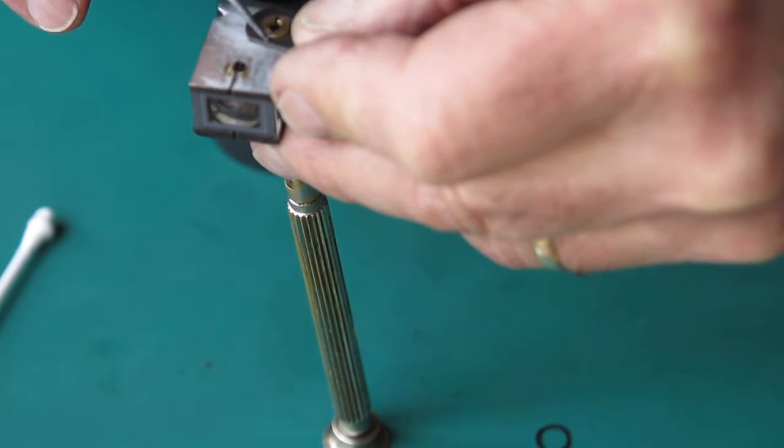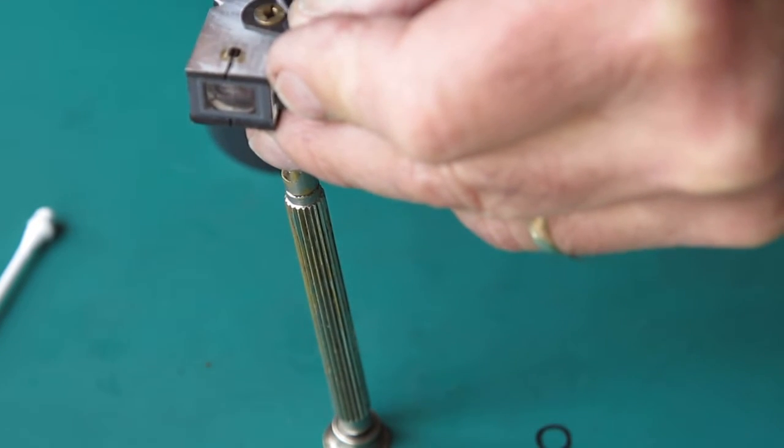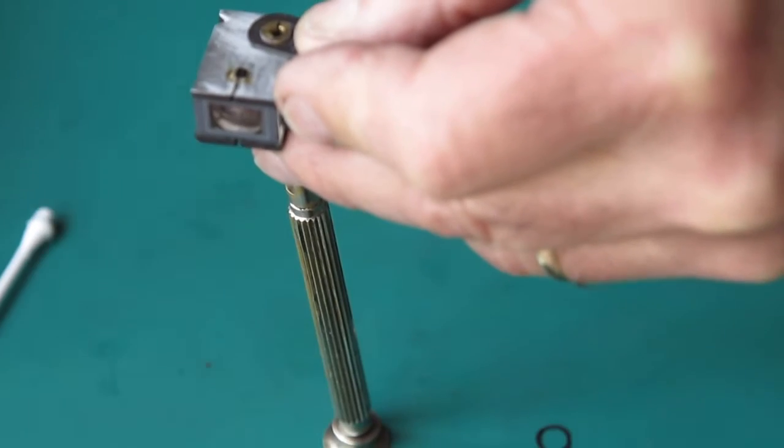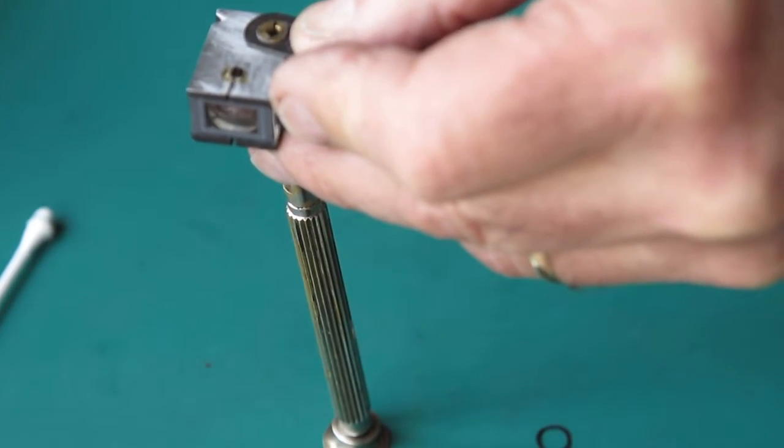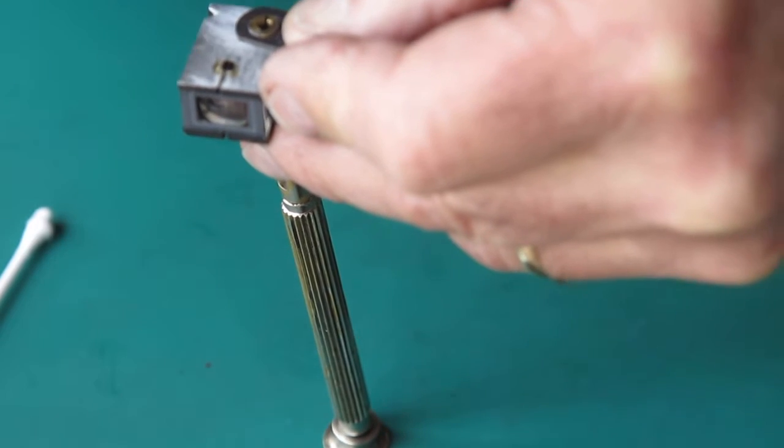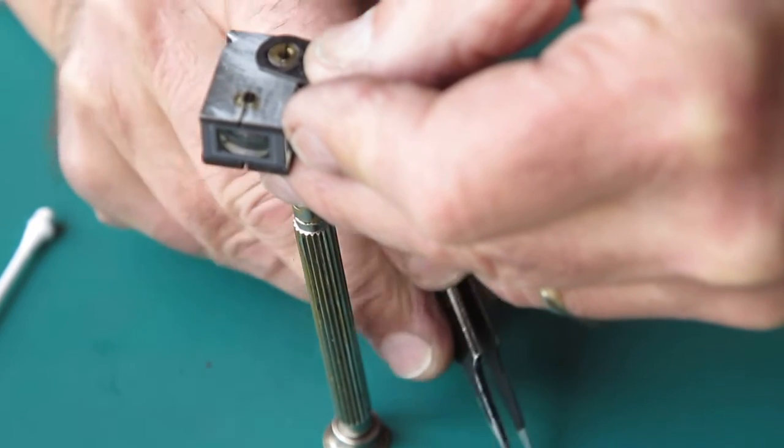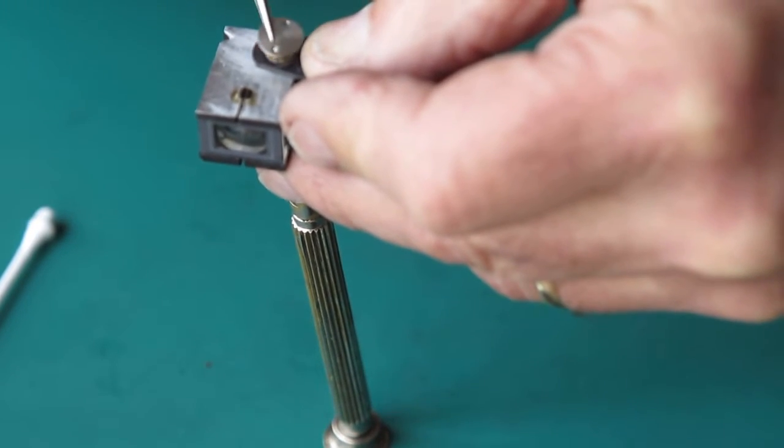A little wipe of molybdenum paste around the bush at the top there, because that's where the wavy washer is going to run. Put the wavy washer in position and the screw.